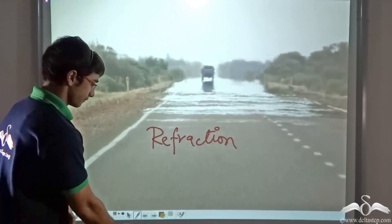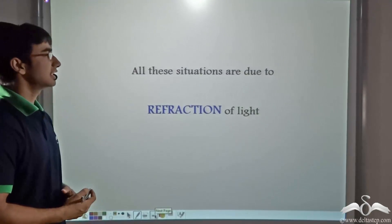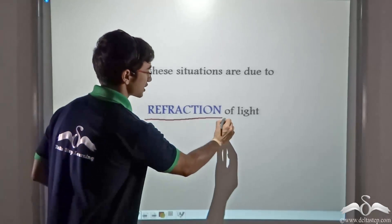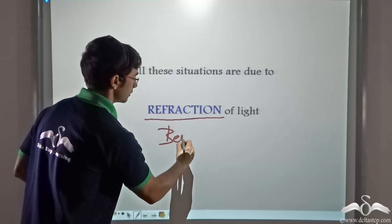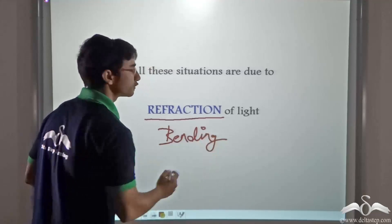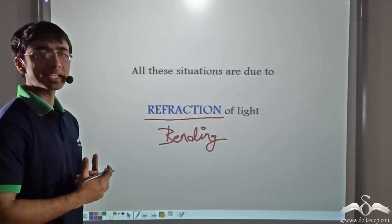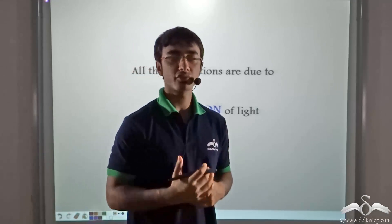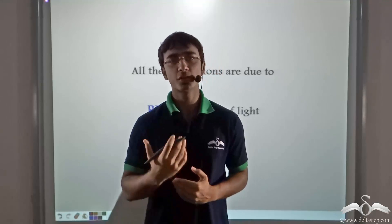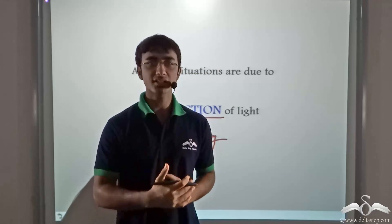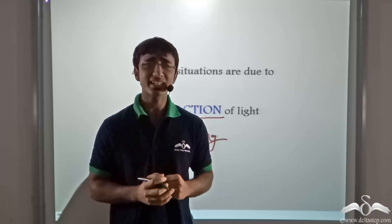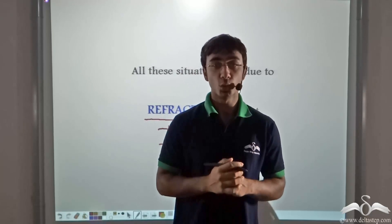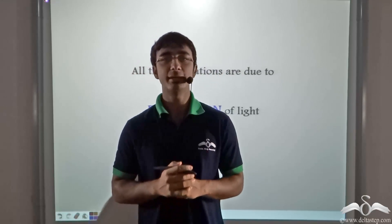So what can we say? We can say that all these situations or all these phenomena are taking place due to the refraction or bending of the light rays. So taking a quick recap, what did we learn? We learnt that whenever light travels from one medium to another, let's say from air to water or water to glass or even water to air, whenever there is a change in medium, the light rays bend from their original path. They no longer continue in a straight line, instead they bend.